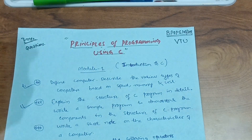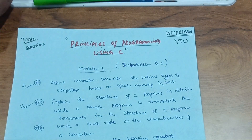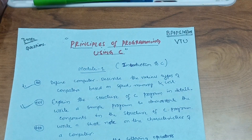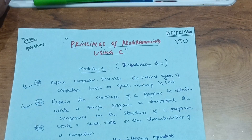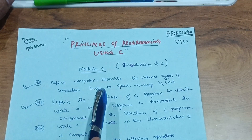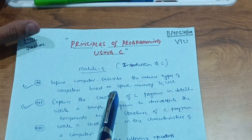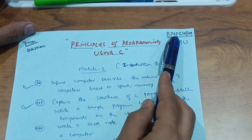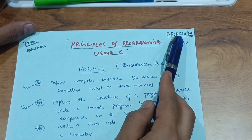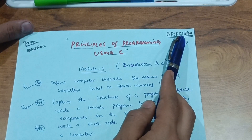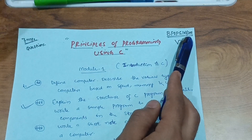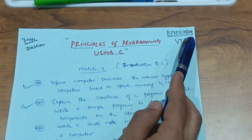Hello everyone, welcome back to my channel. Hope you all are enjoying my passing strategy series, especially for VTU students. Today I'm covering another subject: Principles of Programming using C. The subject code is BPOP — Principles of Programming — with code S103203. It is the third subject in both first and second semesters.